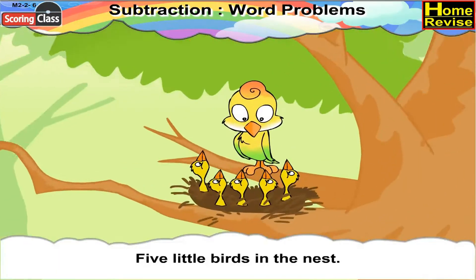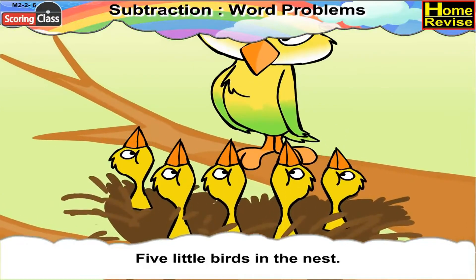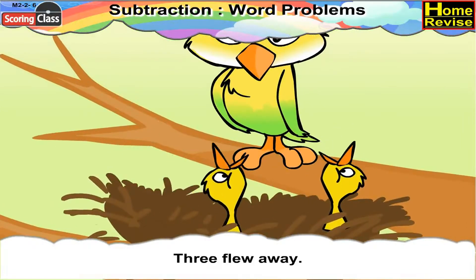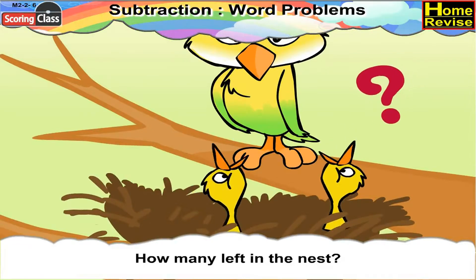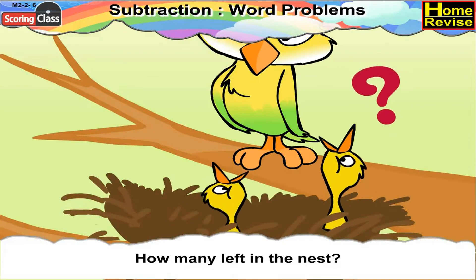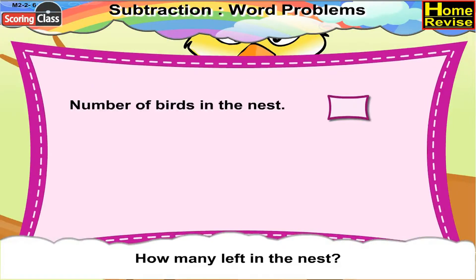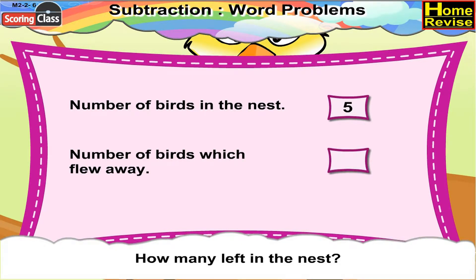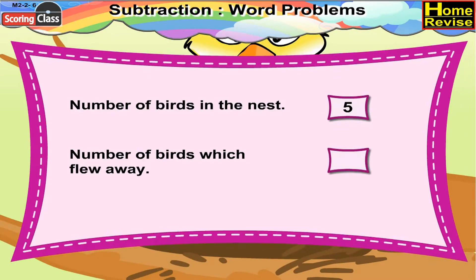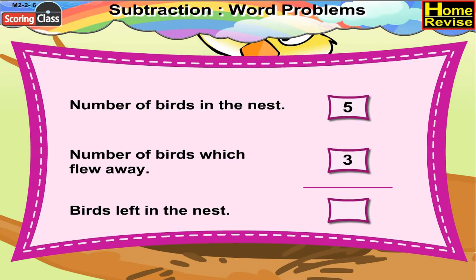Five little birds in the nest. Three flew away. How many are left in the nest? Number of birds in the nest — five. Number of birds which flew away — three. Birds left in the nest would be five minus three, that is two. So two birds are left in the nest.